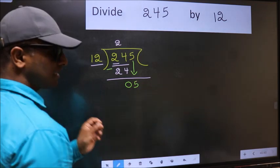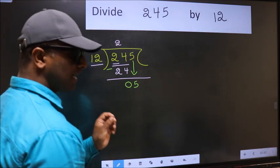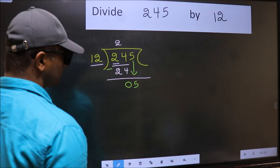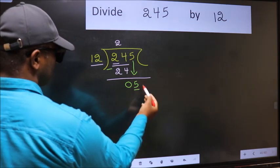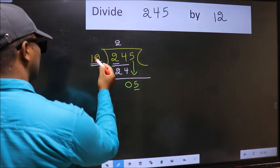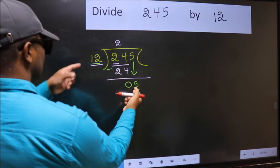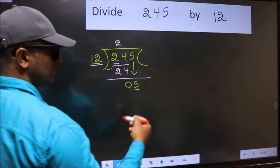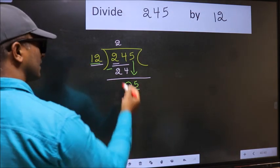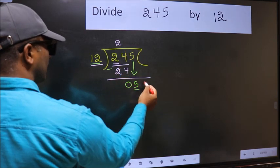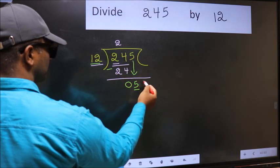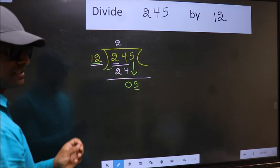After this step, the mistake happens. And the mistake is this. Here we have 5 and here 12. 5 is smaller than 12. So what many do is, they directly put dot and take 0. Which is wrong.